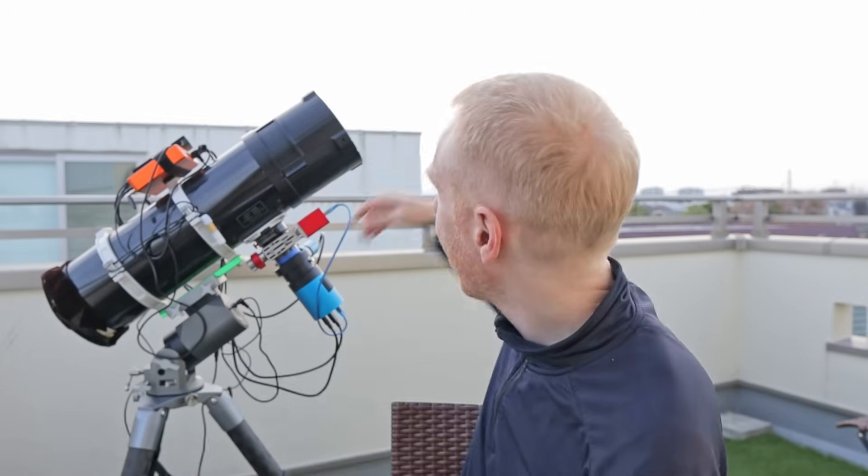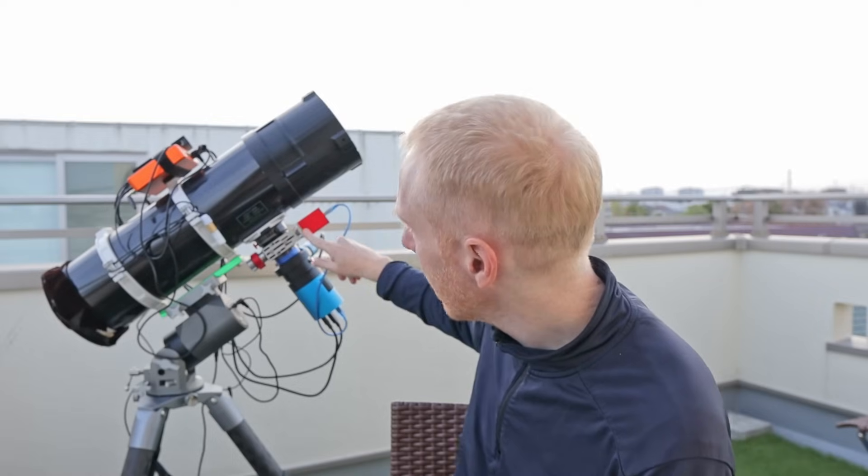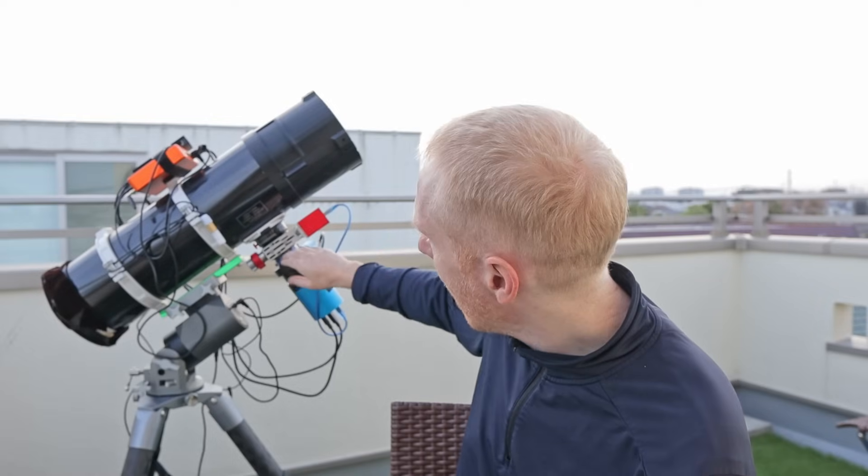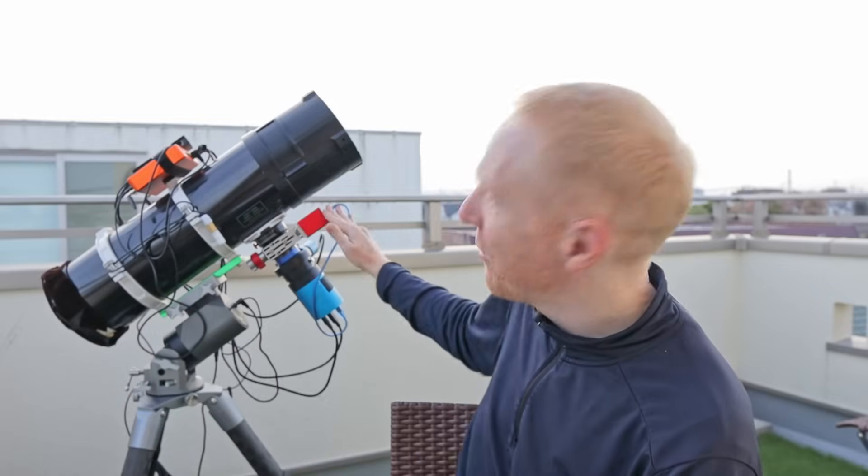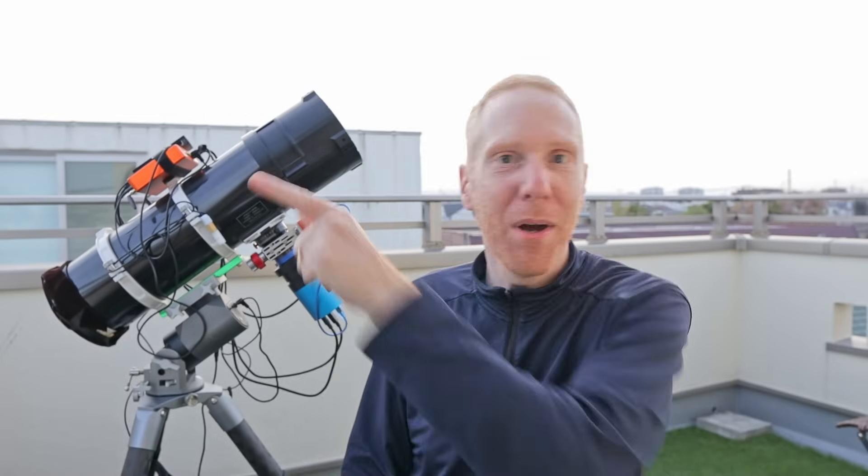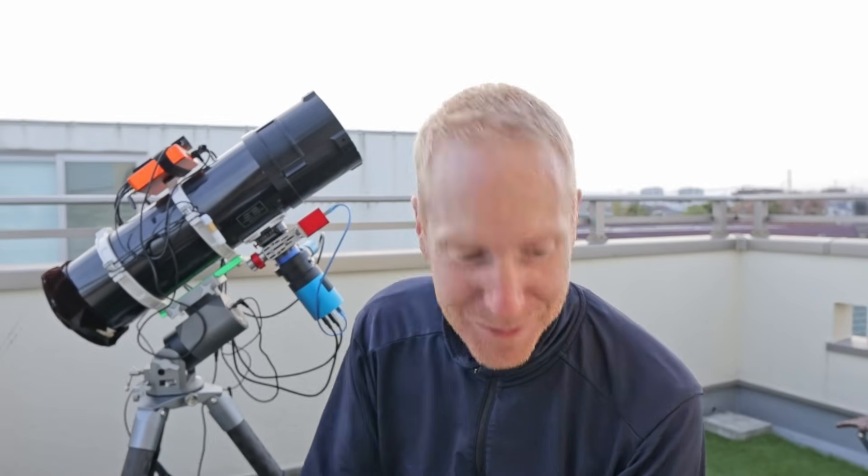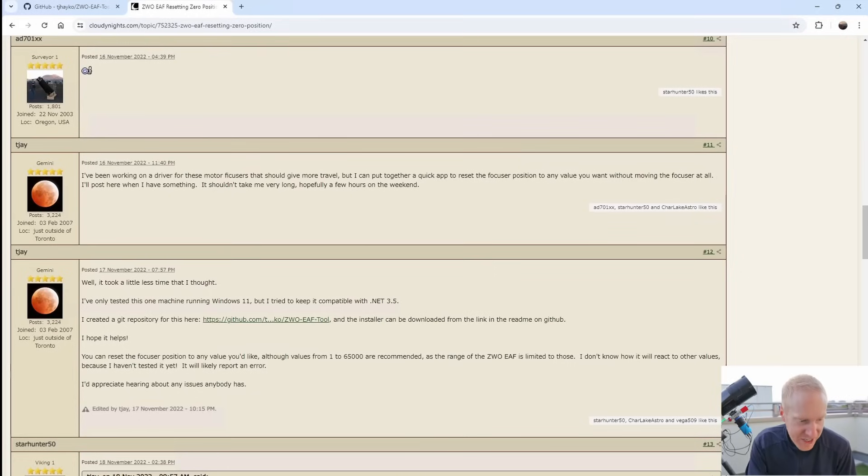There's several possibilities. You could detach the focuser physically so that it does not rotate the actual or does not move the actual draw tube or the mirror if you're using like a Schmidt-Cassegrain telescope and then set it to something like 30,000 steps and then you can reconnect it so you can reach the point of best focus. That's really annoying. But someone came to the rescue. And specifically, TJ here on Cloudy Nights came to the rescue. TJ, you absolute rock star.